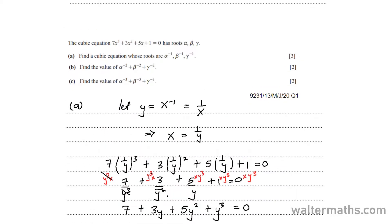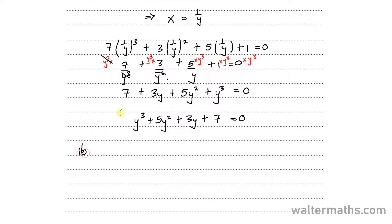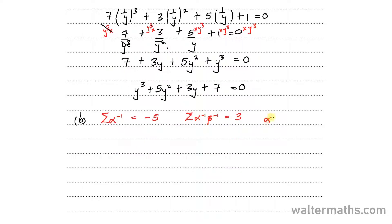Let's go on to part B. On part B, they say find the value of alpha to the power minus 2 plus beta to the power minus 2 plus gamma to the power of minus 2. First of all, we are going to need the sum of roots for the new equation. The sum of roots of this form is minus B over A, which is minus 5. Then the sum of product of pairs for the new equation in terms of Y is C over A, so that's 3. And the product of roots for the new equation is minus D over A, which is minus 7.